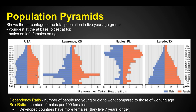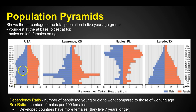Starting with the United States, you can see our population is pretty even. We've got people that are babies, teens, twenties, thirties. As we get older it starts to get smaller in population because as we get up towards the eighties, people don't live as long.